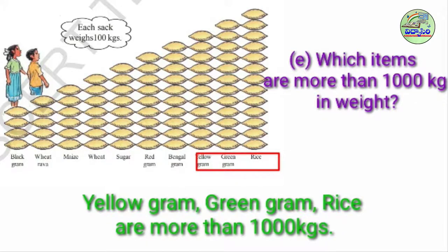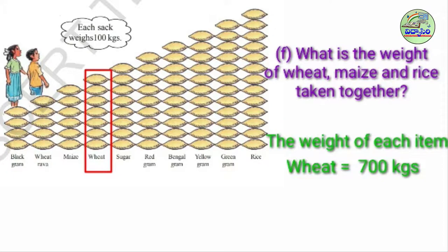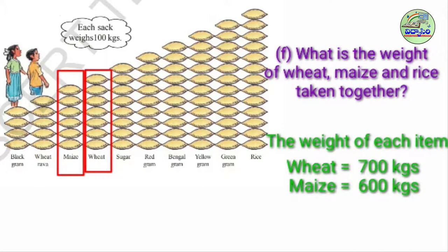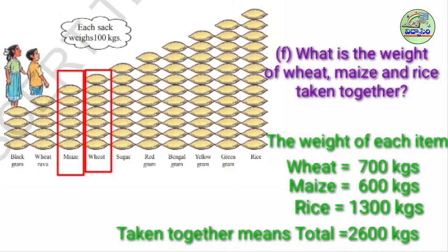If you have any doubts, open your textbook and see this lesson once again. Next question F: What is the weight of wheat, maize, and rice taken together? Wheat has 7 bags, so wheat = 700 kgs. Maize has 6 bags, so maize = 600 kgs. Rice has 13 bags, so rice = 1,300 kgs. Taken together means we do addition, so the total is 2,600 kgs.